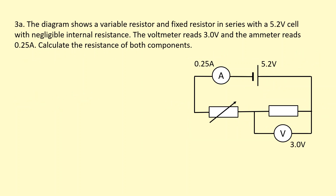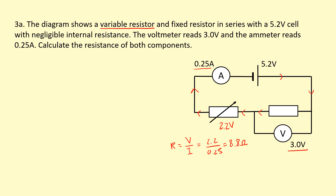The diagram shows a variable resistor and a fixed resistor in series with a 5.2-volt cell with negligible internal resistance. The voltmeter reads 3 volts and the ammeter reads 0.25 amps — calculate the resistance of both components. Since this is 3 volts, the other must be 2.2 volts to add up to 5.2. The current through the whole circuit is 0.25 amps. For the variable resistor: 2.2 divided by 0.25 gives 8.8 ohms. For the fixed resistor: 3 divided by 0.25 gives 12 ohms.